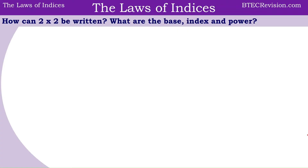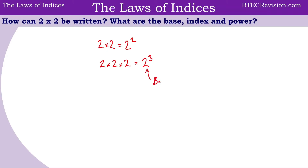Let's start by looking at 2 times 2, which can be written as 2 to the power of 2. If you look at 2 times 2 times 2, this can be written as 2 to the power of 3. So it depends on the number of 2's — in this case we have 3 and therefore we have a power of 3. The number 2 here is called the base because it has a power next to it, and the 3 is the power, and another word for that is the index.